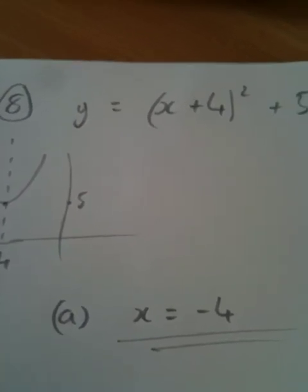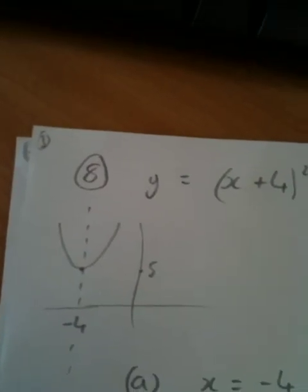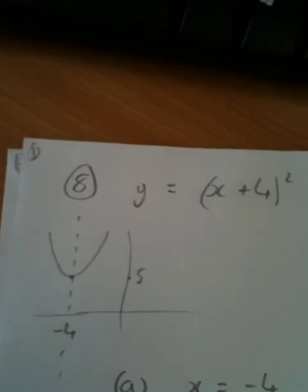Part B, write down the coordinates of the turning point. The turning point is basically the point where the parabola stops decreasing and starts increasing. That's happening at negative 4 comma 5.